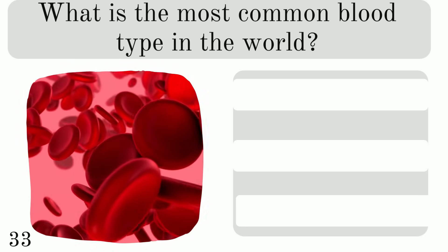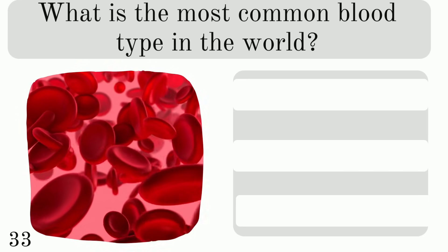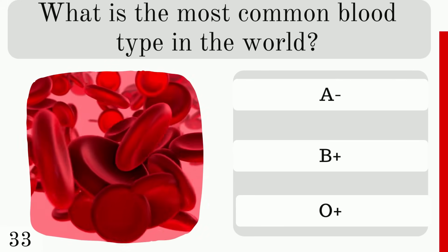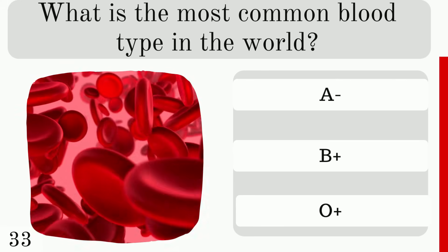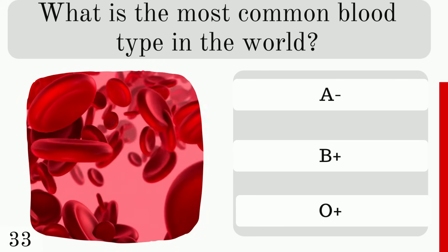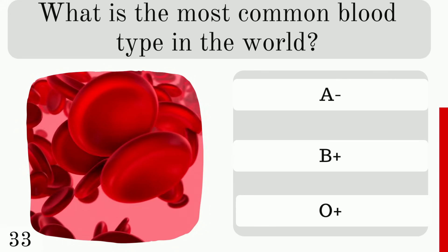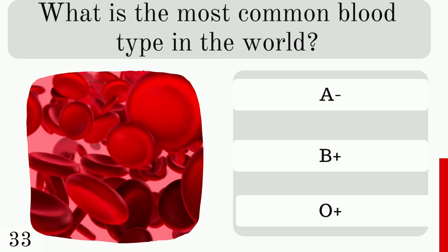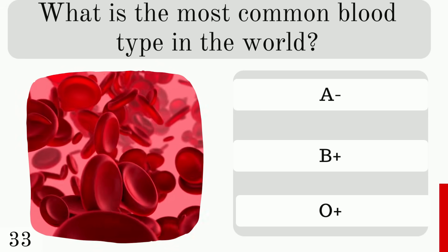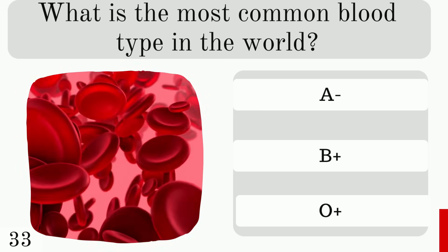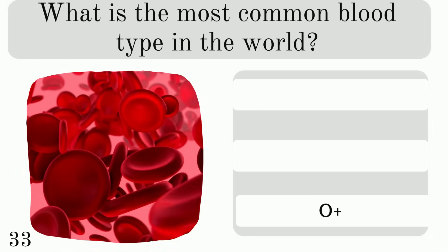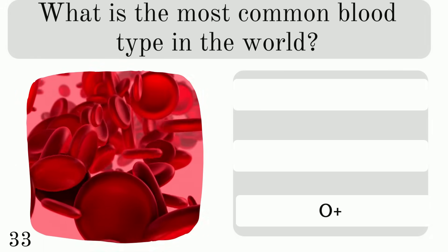What is the most common blood type in the world: A negative, B positive, or O positive? The answer is O positive.